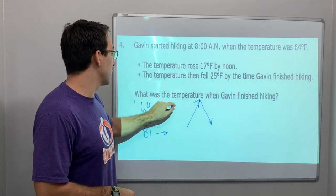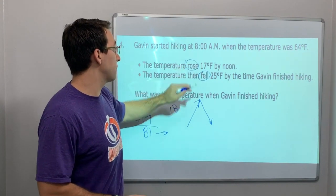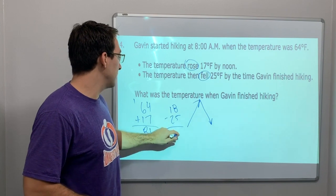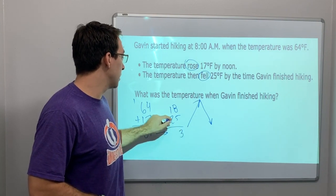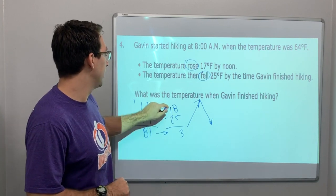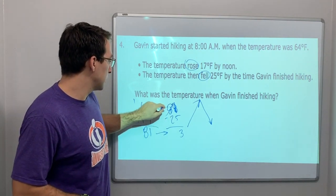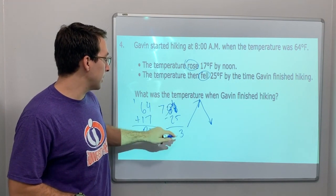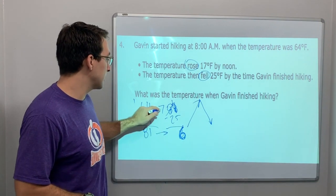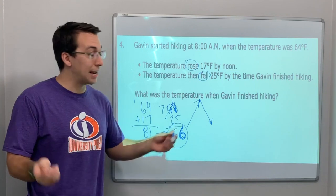Then what do we say? 81 minus—then it fell, it rose and it falls, it goes up and then it goes down—minus 25. Five, eight minus five is three. Uh oh, 81 not 18. Seven, okay. So one, eleven minus five is six, seven minus two is five. It finished at 56 degrees.